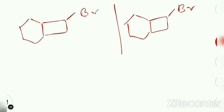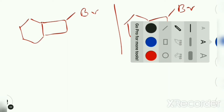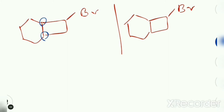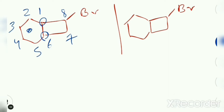This is a Bicyclic compound with a bromine substitution. For nomenclature we start with numbering from any BHC. If we start numbering with this carbon as number 1, the numbering goes towards the large ring system: carbon 2, 3, 4, 5, 6, 7, 8. In this case, the bromine is at carbon number 8.